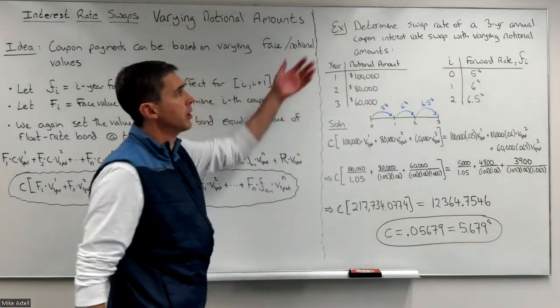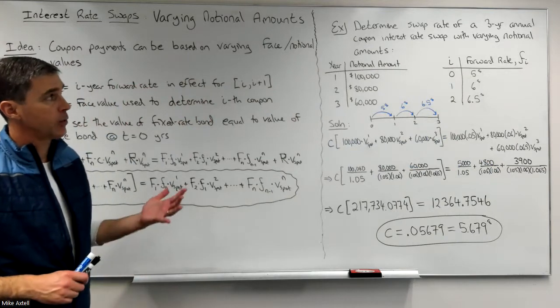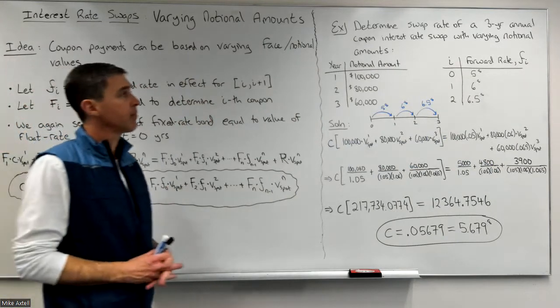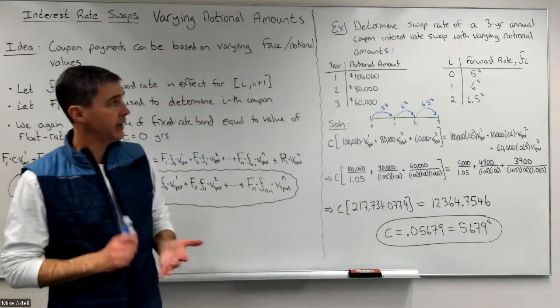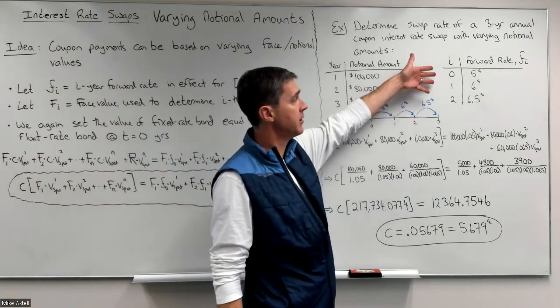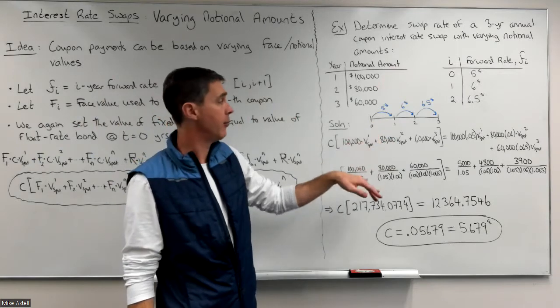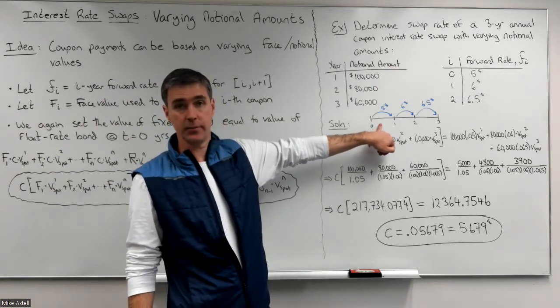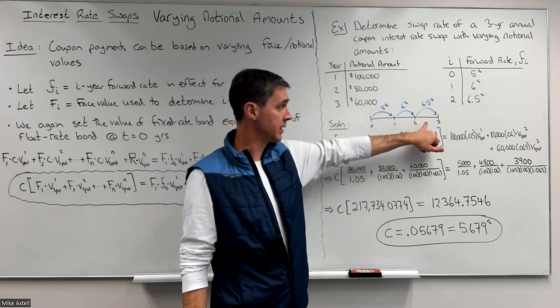For example, we're going to determine the swap rate of a three-year annual coupon interest rate swap with varying notional amounts. The notional amounts are $100,000, $80,000 and $60,000. Our forward rates are f zero, f one, and f two. Just to remind you, I've made a time value diagram. F zero takes us from zero to one, F one takes us from one to two, and F two takes us from two to three.